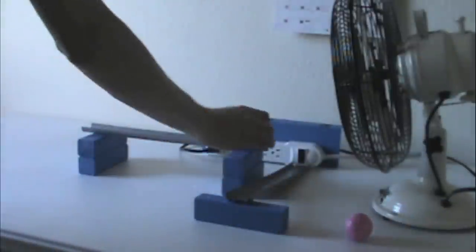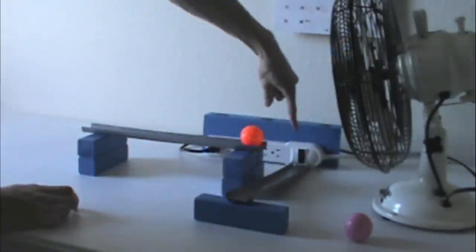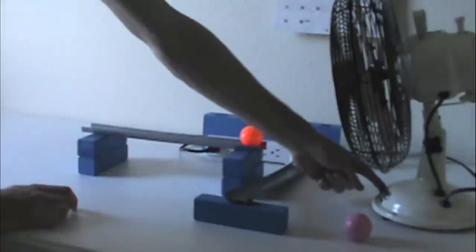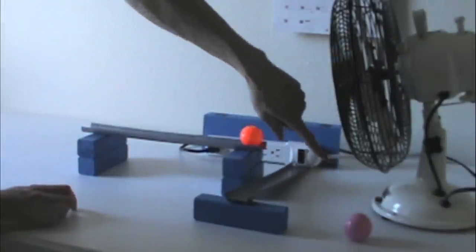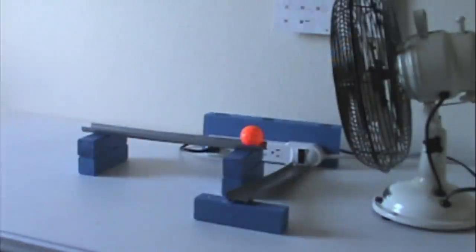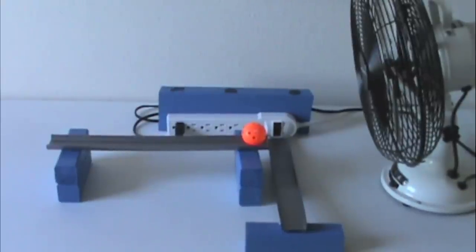And now for the final setup, I'm going to put the orange ball on the second ramp, turn the power strip off, turn the fan on, and roll the pink ball down the first ramp. Here's what it looks like when finished.